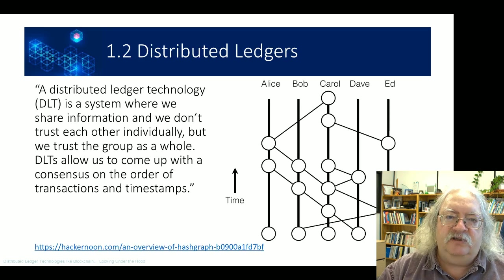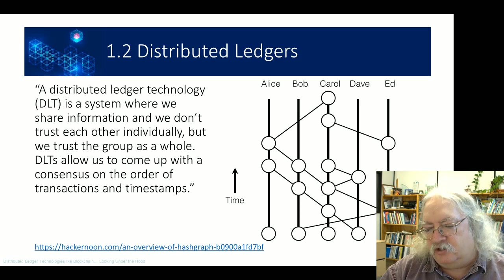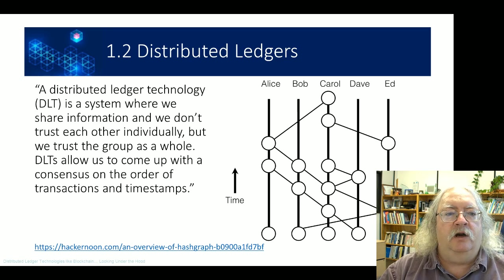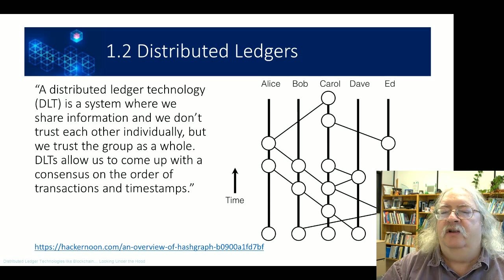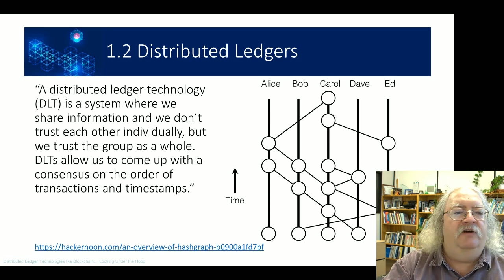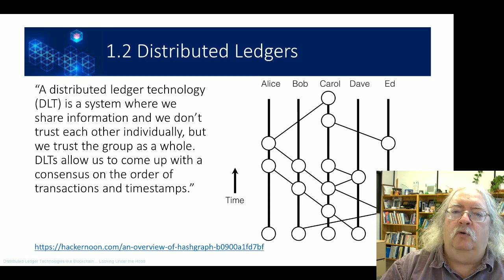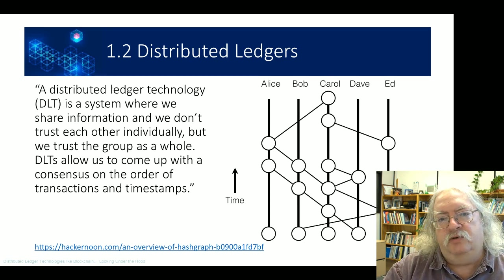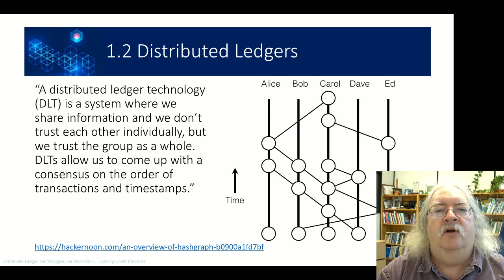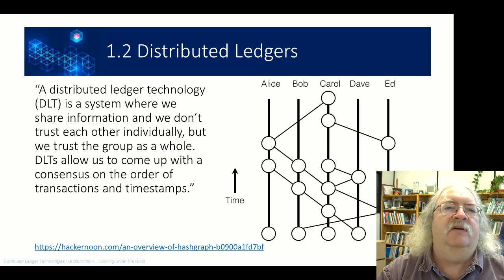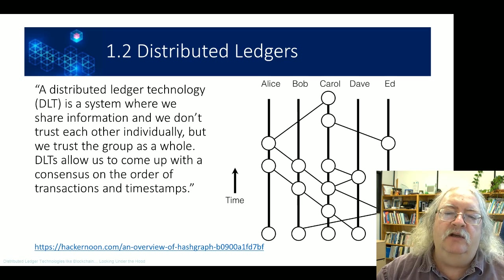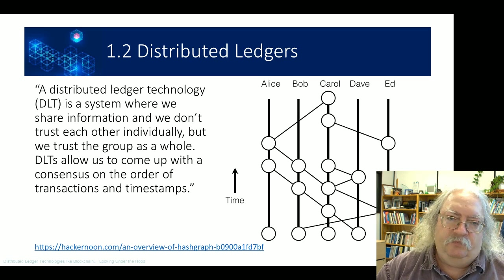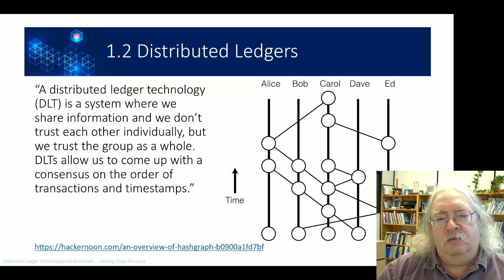Another aspect of this technology is the idea of the distributed ledger. This is a system where we share information amongst each other. We don't trust one individual or each individual individually, but we do trust the group as a whole. It's the interactions between the group as a whole that create the trust, rather than placing faith in a single individual. There are different kinds of distributed ledgers, different ways of storing data in a distributed fashion, and different types of blockchain approach this differently.